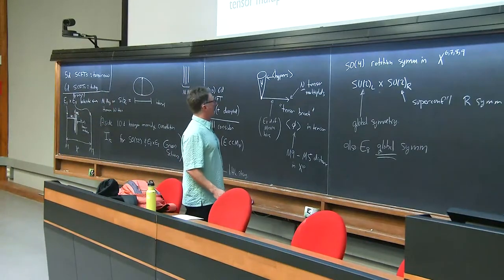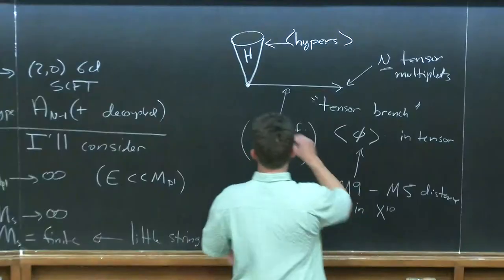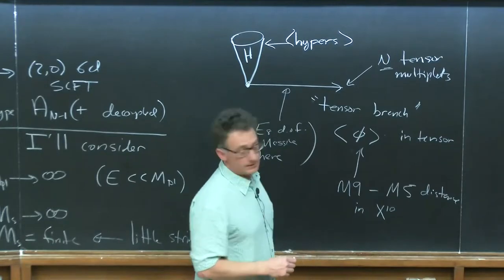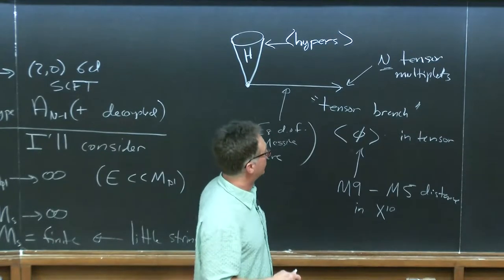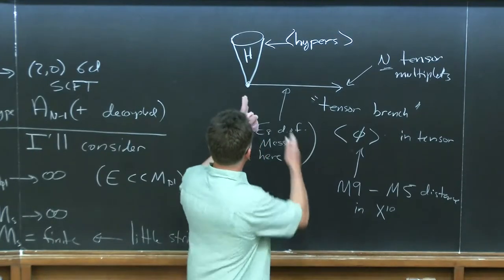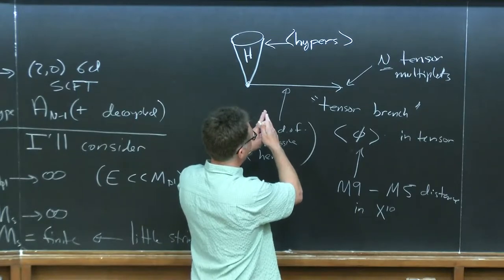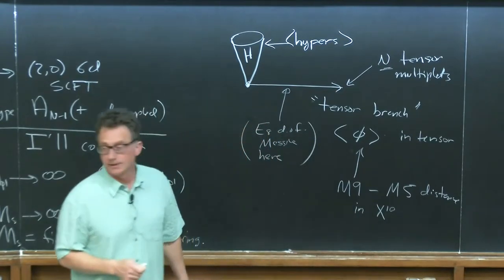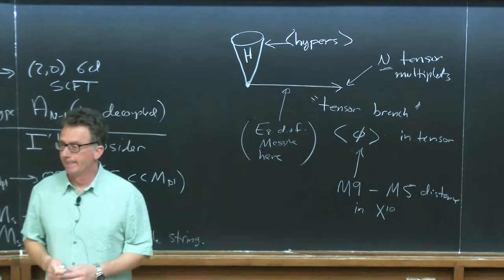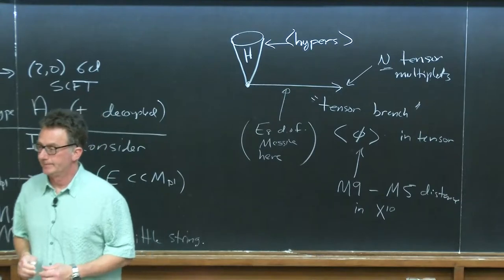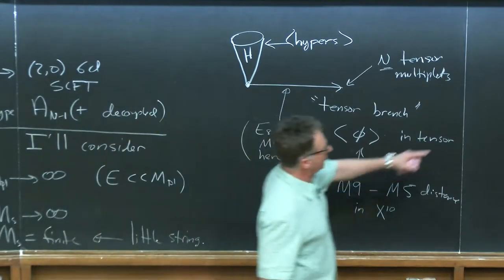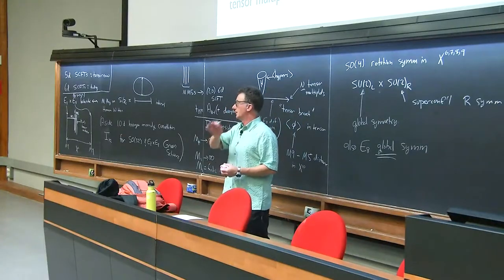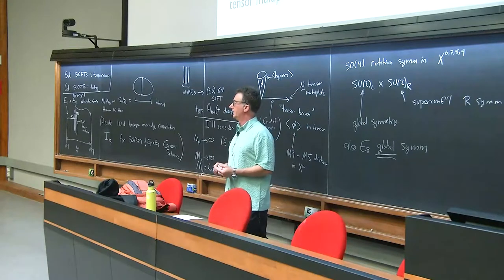The global symmetry at the origin is the same regardless of N. These symmetries are rotations in directions transverse to the branes and so don't depend on how many branes we have.